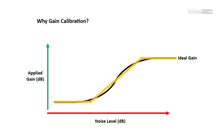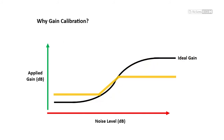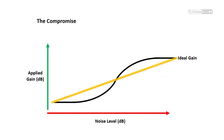Accurately determining which noise levels ANC should respond to would involve an in-depth analysis of every install, since the environment varies from case to case. This makes the task formidable and time-consuming. If the integrator instead tried to guess the correct curve, he could easily end up with incorrect results. One common approach is to compromise by reducing the slope of ANC's gain curve and applying it to the entire noise range—it kind of works everywhere, but also doesn't really do what's expected anywhere.